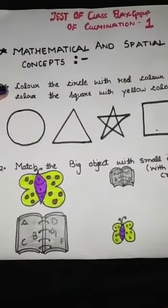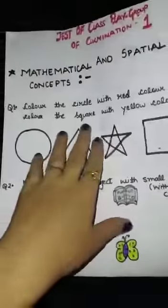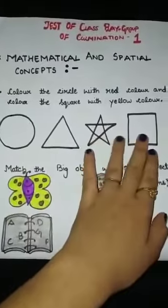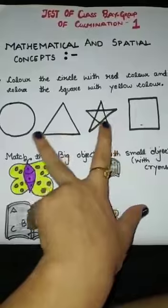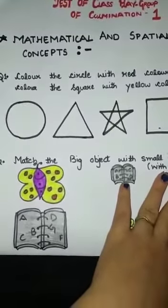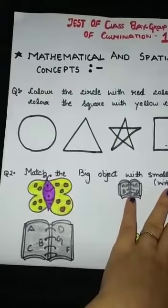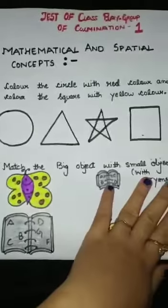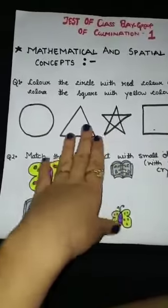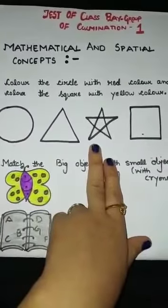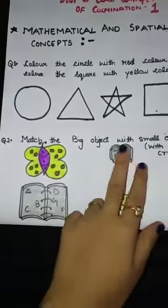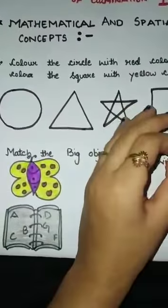Here is the first question: colour the circle with red colour and colour the square with yellow colour. I have drawn many shapes here. You have to identify from these shapes where the circle is and colour it with red, and identify the square and colour it with yellow. Only this much for question one.